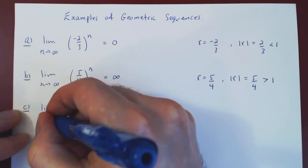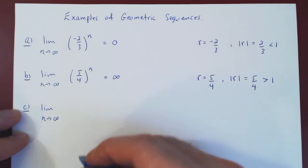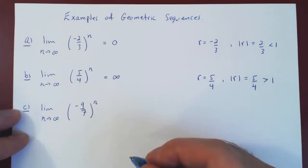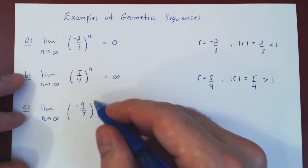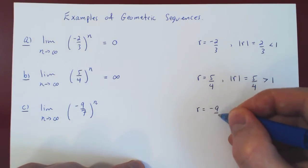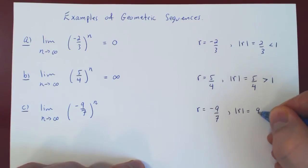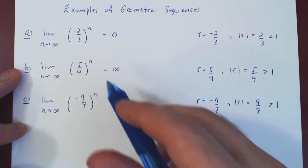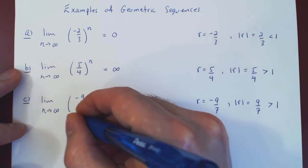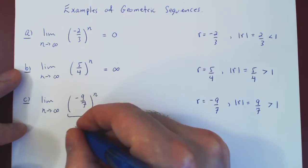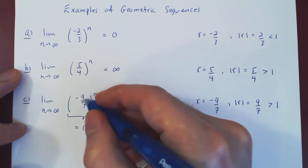What about the limit as n goes to infinity of negative 9 over 7 to the n? Again we're taking larger and larger powers of the fixed real number negative 9 over 7. As always we look at the absolute value of r, which is 9 over 7, and this is strictly larger than 1. So the limit does not exist, but it is not positive nor negative infinity. If we rewrite negative 9 over 7 to the n and split off the negative 1 to the n and then 9 over 7 to the n, we can see why.